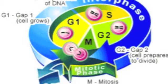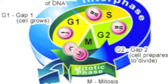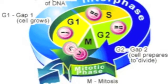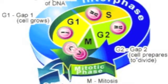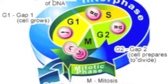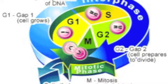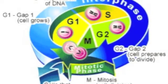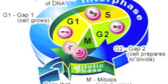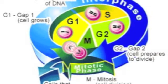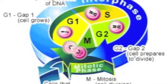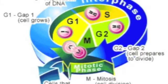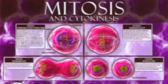The cell cycle includes cell growth, specialization, and replication. The cell cycle begins with G1, followed by S phase, where DNA is synthesized, followed by G2, followed by the mitotic phase, consisting of mitosis and cytokinesis.